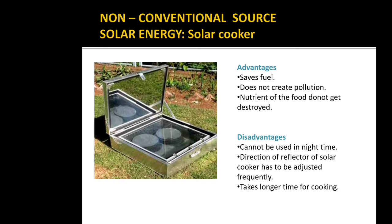This is a picture of the solar cooker. A solar cooker is a device used to cook food using solar energy. The advantages of a solar cooker are that it saves fuel, does not create pollution, and the nutrients of the food do not get destroyed.